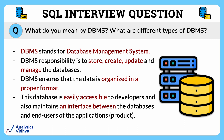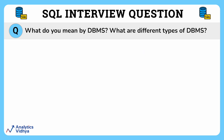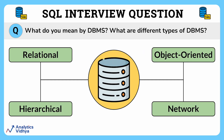Now let's look at the types of DBMS we have. First, we have a relational database, also known as RDBMS. It is a system where data is organized in two-dimensional tables using rows and columns.